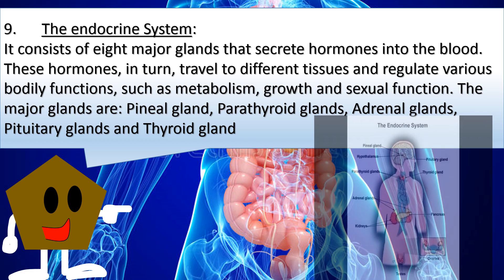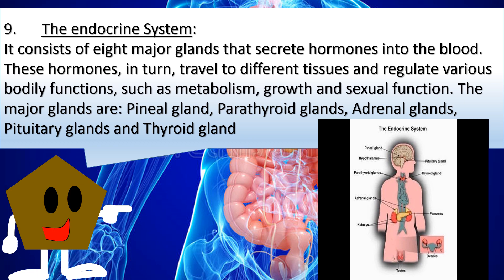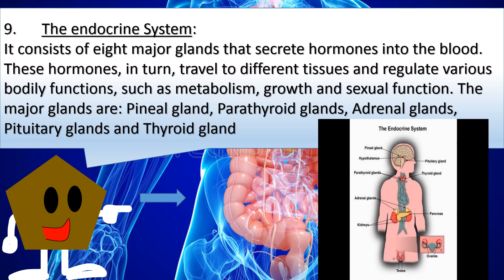9. The endocrine system consists of eight major glands that secrete hormones into the blood. These hormones, in turn, travel to different tissues and regulate various bodily functions such as metabolism, growth, and sexual function. The major glands are pineal glands, parathyroid glands, adrenal glands, pituitary glands, and thyroid glands.